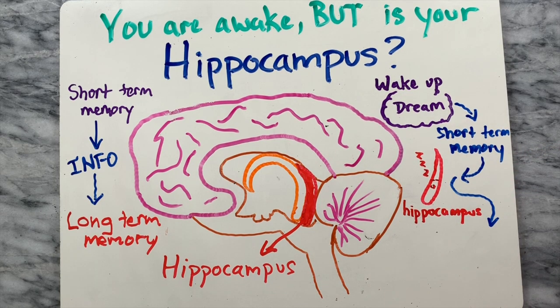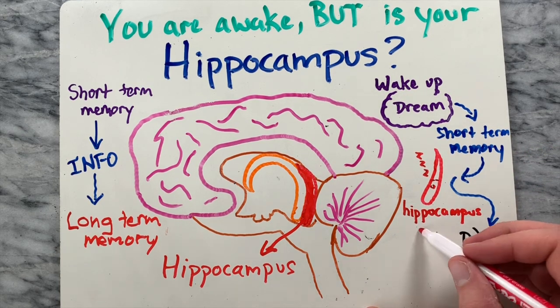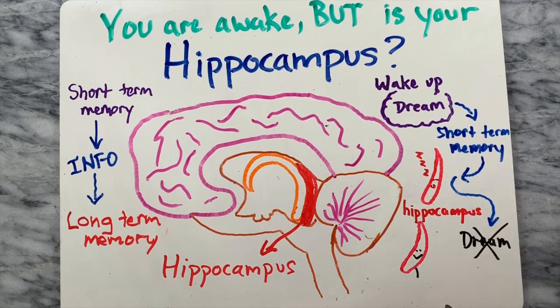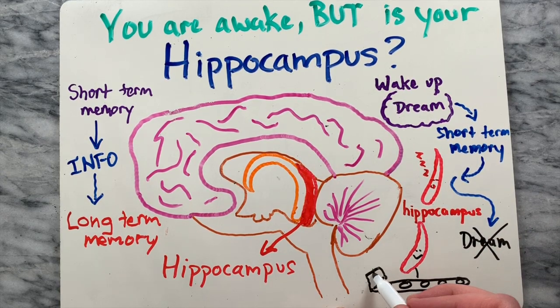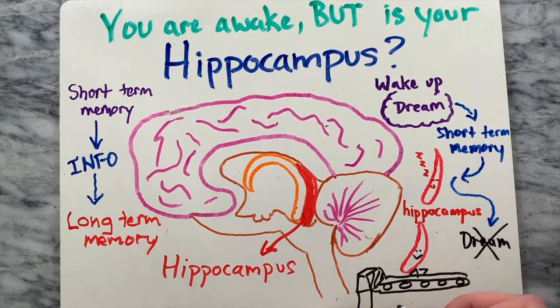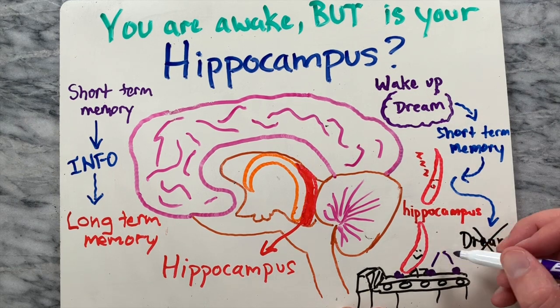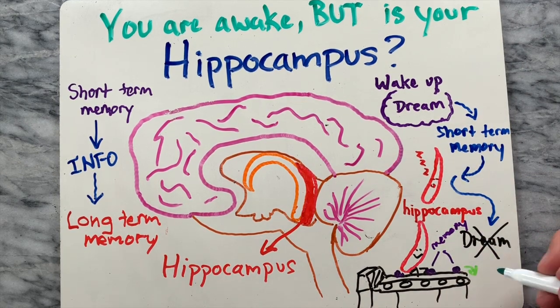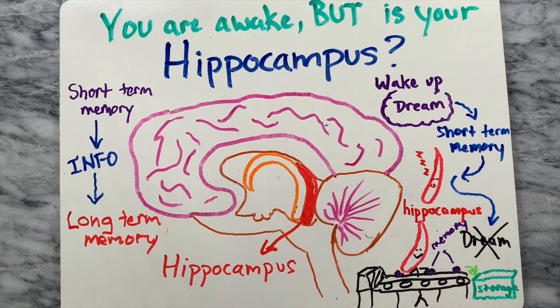While this might explain why dreams disappear so quickly, it doesn't mean that your hippocampus has been inactive throughout the night. In fact, this region is quite active during sleep and appears to be storing and caring for existing memories to consolidate them instead of listening for incoming new experiences.